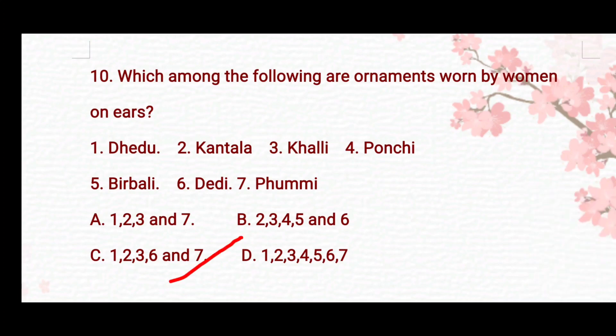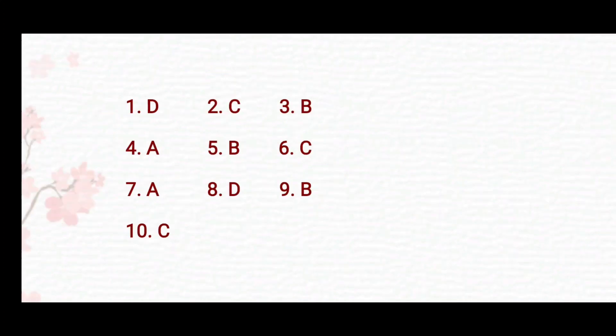The right answer is Option C: 1, 2, 3, 6 and 7 — that is Dedu, Kantala, Khalli, Deddi and Fummi. Ponchi is a wrist ornament for men, and Birbali is an ear ornament for men. That was all — match your answers and share your marks in the comment section. Thank you!